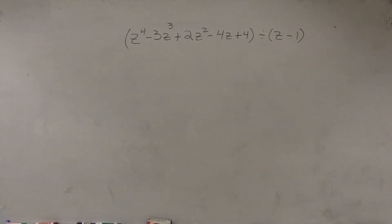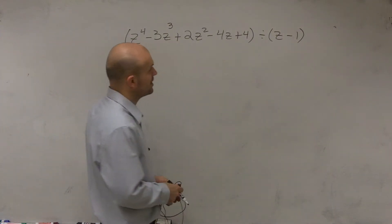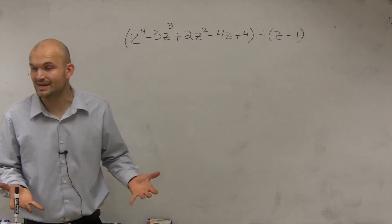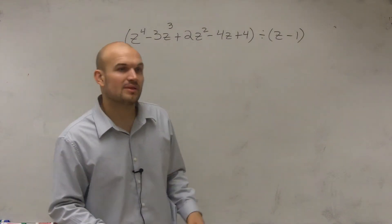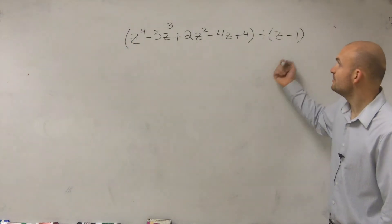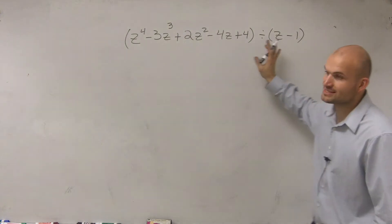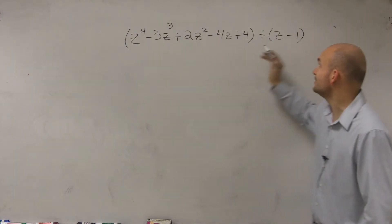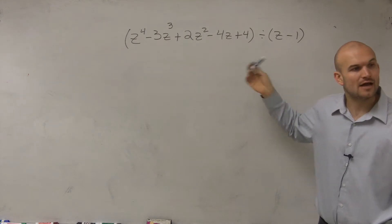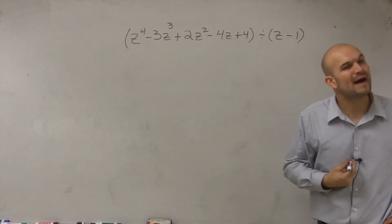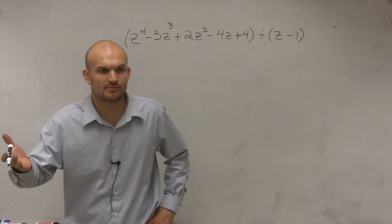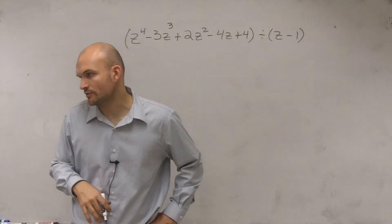We're going to be looking at a problem that's a little bit different than what we previously did. We're going to have to apply the division algorithm for long division. Even though all these terms are being divided, they're not being divided by a monomial — they're being divided by a binomial. And when we're dividing by a binomial, or anything larger like a polynomial, we need to use the division algorithm.